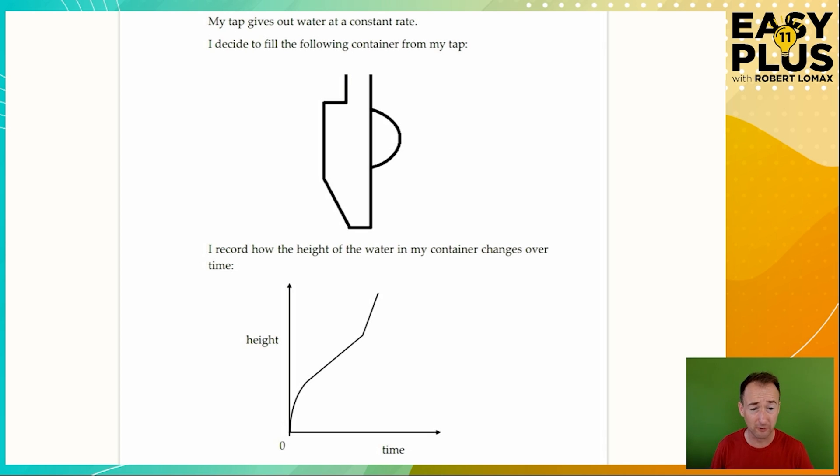So my tap gives out water at a constant rate. That's always going to be the case for a question like this. I decide to fill the following container from my tap. You can see there's a rather nifty but puzzling container here with a handle and a space that's going to be filled up with water. Obviously this is a 2D representation like a cutout of the container. We can assume that it's rounded in a consistent fashion of some kind.